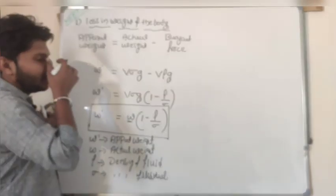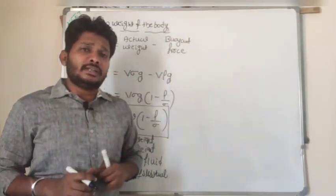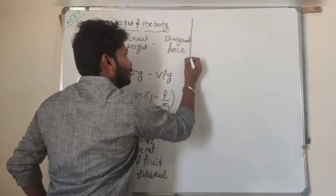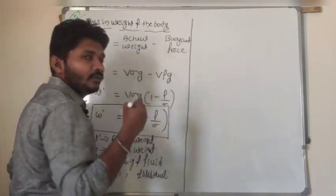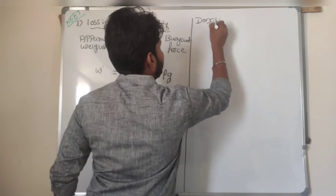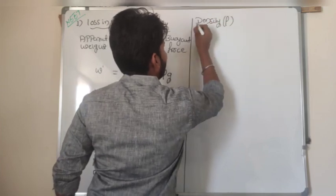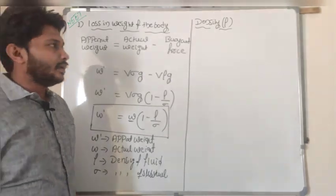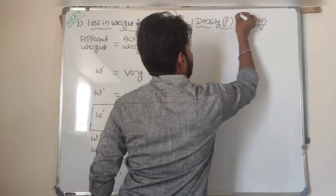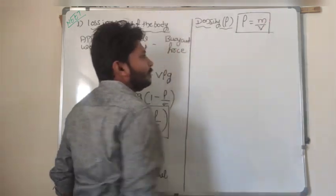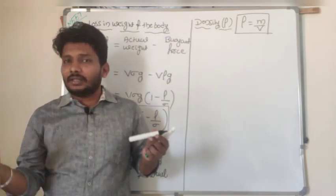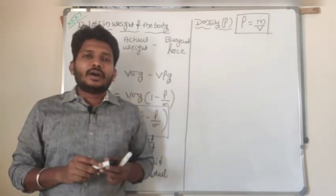Now we will understand the meaning of density. Generally, density is the ratio of mass per unit volume, represented by the symbol rho: density = mass / volume. In order to find the density of any body, we compare it with another body — taking water as a reference.